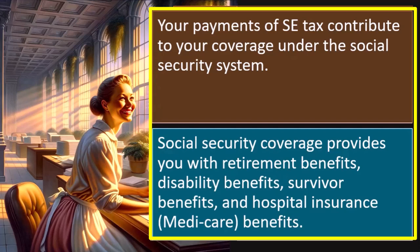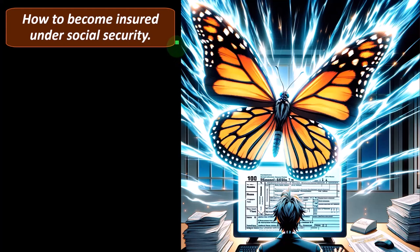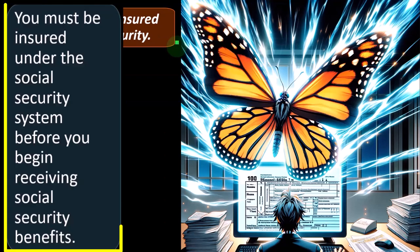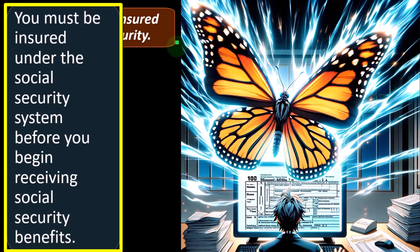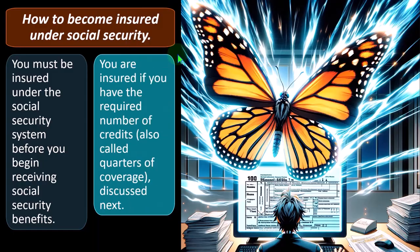Social Security coverage provides retirement benefits, disability benefits, survivor benefits, and hospital insurance benefits — at quite a high cost. To receive Social Security benefits, you must be insured under the Social Security system before you begin receiving benefits. You're insured if you have the required number of credits, also called quarters of coverage. For 2023, you receive one credit — up to a maximum of four credits — for each $1,640 ($1,730 for 2024) of income subject to Social Security tax.